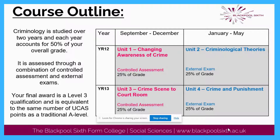Then in year 13, the course follows a similar pattern whereby you study unit 3, crime scene to courtroom, assessed via a controlled assessment, followed by unit 4, crime and punishment, which is assessed via an external exam. Your final award for the course is a level 3 applied diploma, and this qualification is equivalent to the same number of UCAS points as a traditional A level.